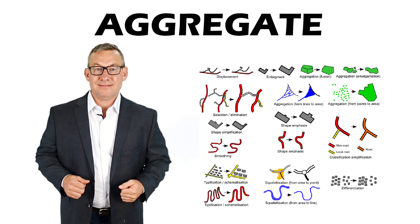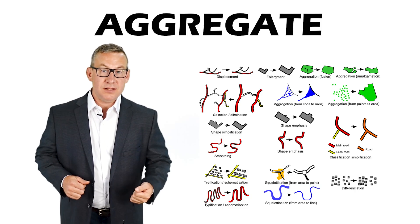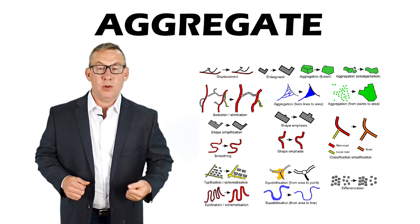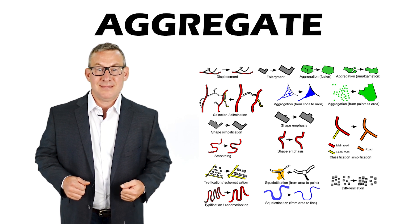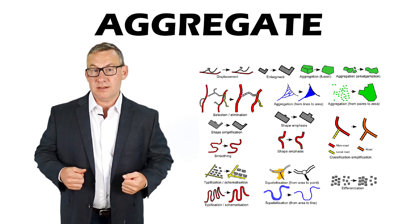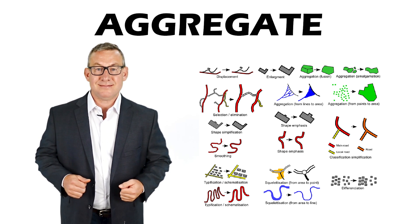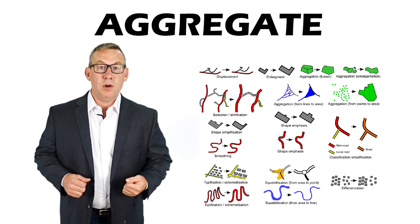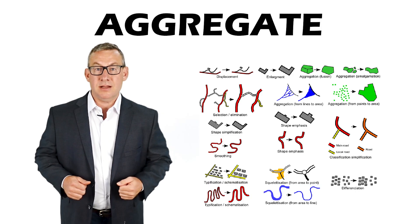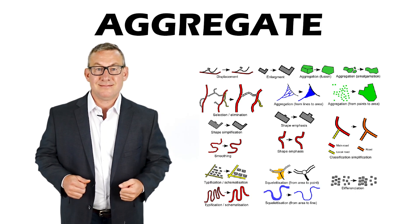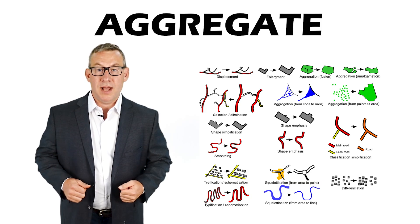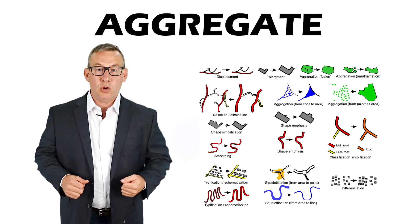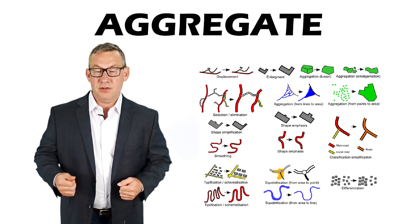Aggregate merges multiple features into a new composite feature. Aggregate often increases the dimension of features. For example, multiple points can be aggregated into a polygon. Aggregate is also known as combine, regionalize, and fuse.